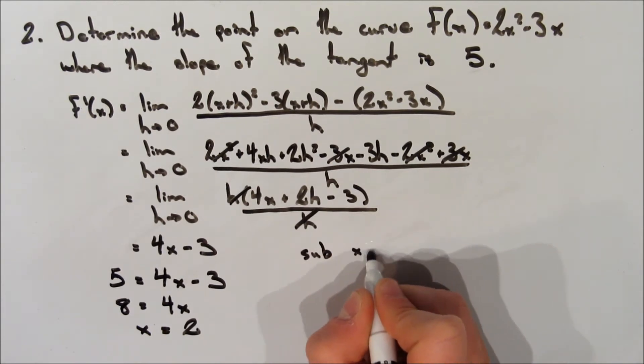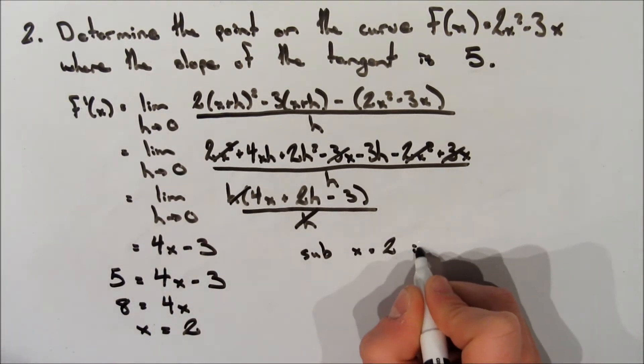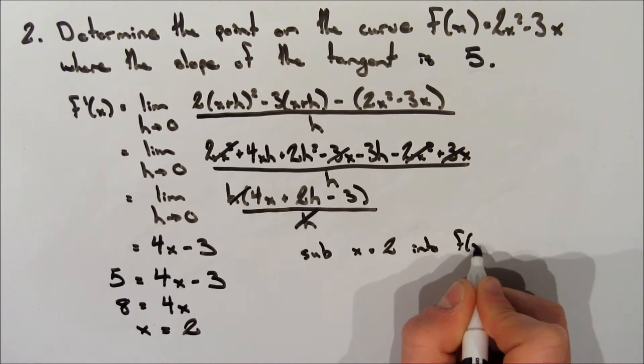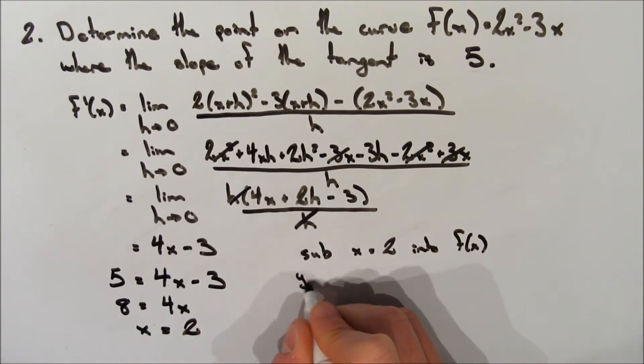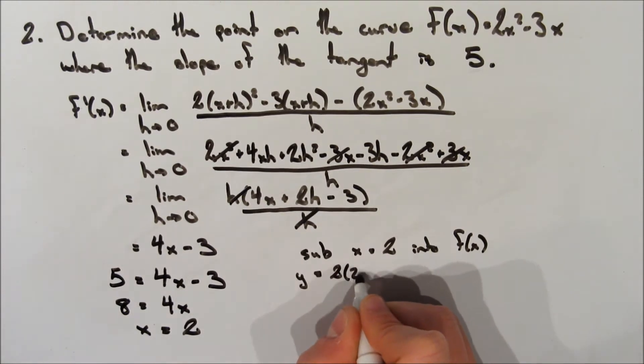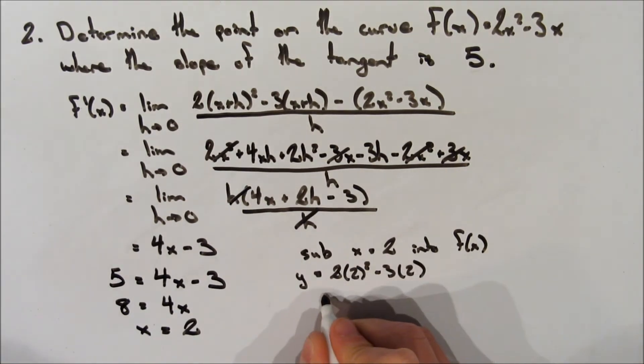So now we have the x coordinate of our point. Now we need to sub that into our original function, f of x, to get the y coordinate of our point. So we say that y is equal to 2 multiplied by 2 squared, which is the x coordinate we just found, minus 3 multiplied by 2, the x coordinate again. And that gives us 2.